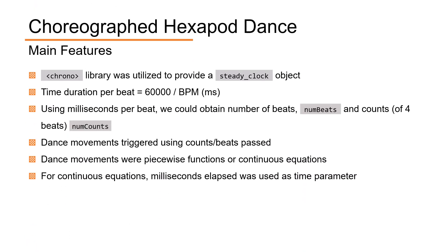To achieve this, the Chrono Library was utilized to provide a steady clock object which could give the time scale needed for beat sync. Time duration per beat was calculated using the formula shown, in milliseconds. Using these milliseconds per beat, we could then obtain the number of beats and the counts of four beats. This information could then be used to trigger the dance movements accordingly. These dance movements themselves were either piecewise functions or continuous equations, and for the latter, milliseconds elapsed was used as a time parameter. Now we will show you a short snippet of our dance choreography.